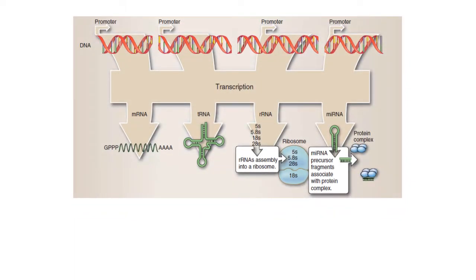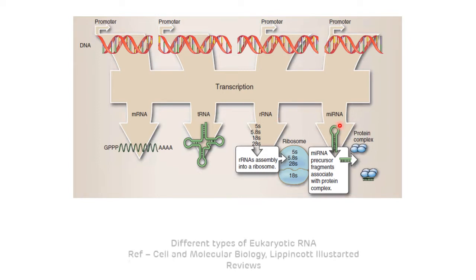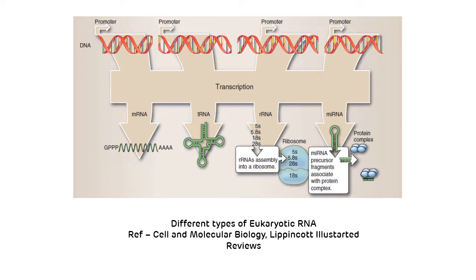This picture shows the different types of RNA present in the eukaryotic cell. Messenger RNA transfers genetic information for protein synthesis. Transfer RNA has a clover-leaf-like structure, is the smallest among all RNAs, and transports amino acids for translation. Ribosomal RNA is present in ribosomes and is also important for translation. The fourth type shown is microRNA.